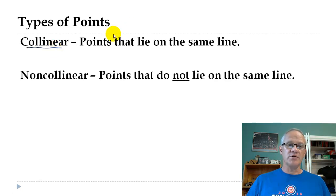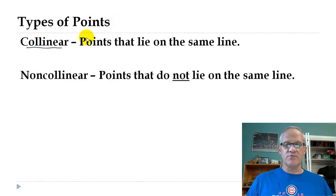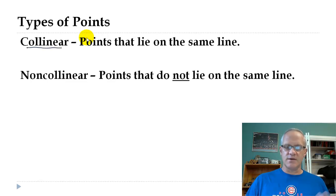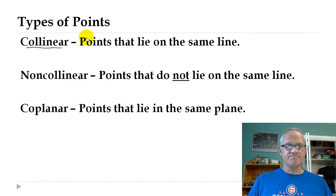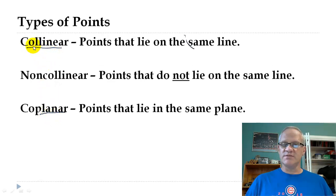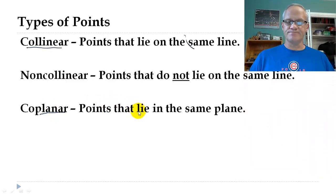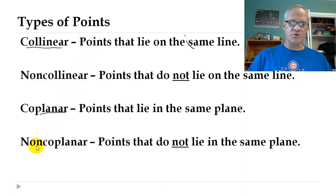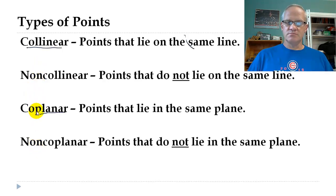Next is non-collinear — it's basically the same word but with 'non' in front of it, meaning 'not.' So non-collinear means points that do not lie on the same line. Then we have coplanar. Look at the second part of the word — 'planar' — that's talking about planes. So coplanar means points that lie on the same plane. And non-coplanar, of course, means points that do not lie in the same plane.